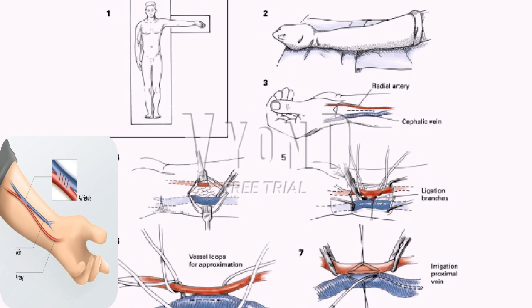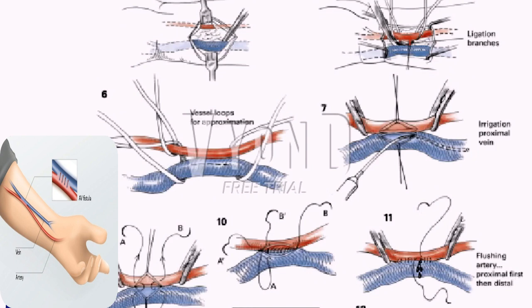A longitudinal venotomy is made in the cephalic vein with a No. 11 blade and extended for 1 cm with iris scissors. The vein is dilated to 3.5 mm and a elastic catheter is passed cephalad to ensure patency of the vein. The vein is then irrigated with heparinized saline.